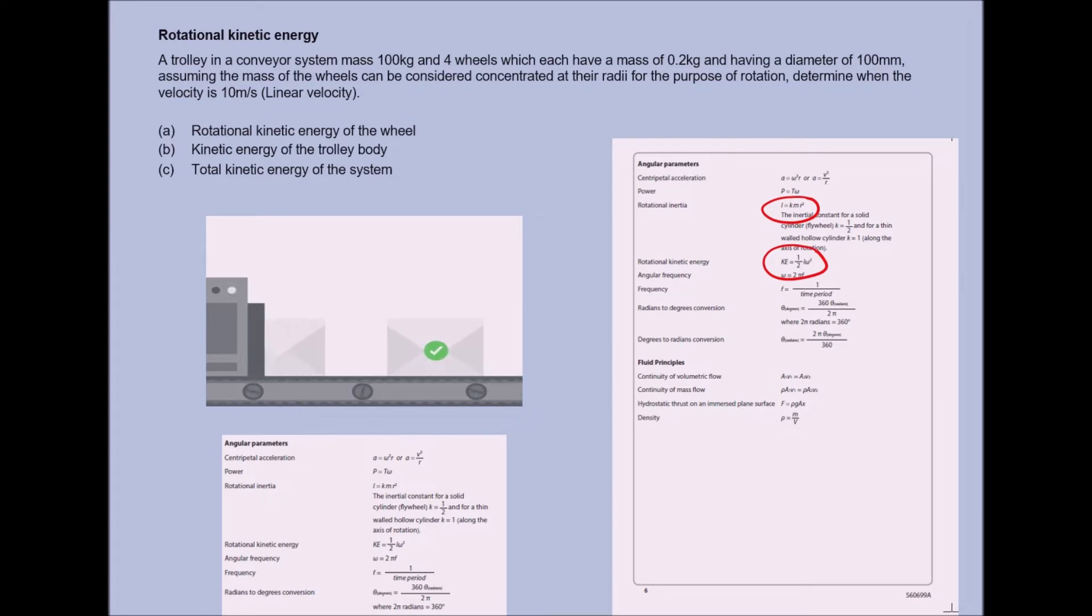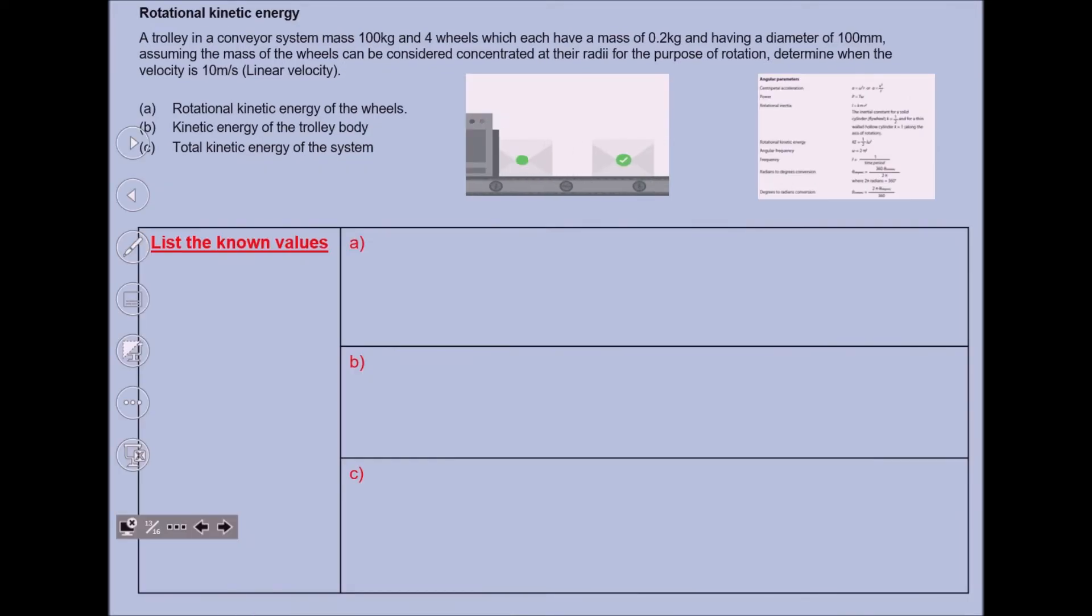What I recommend you do is spend time working your way through this question, making a little list of your known values. Walking our way through here, we've got a trolley and conveyor system with a mass of 100 kilograms.